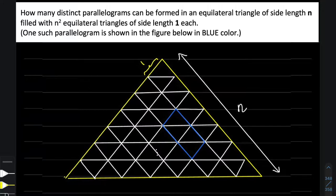In today's question we are again dealing with a permutation and combination question. The question reads: how many distinct parallelograms can be formed in an equilateral triangle of side length n, filled with n² equilateral triangles of side length one each? One such parallelogram is shown in the figure below in blue color.